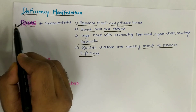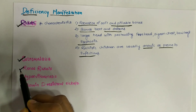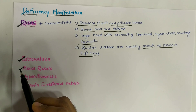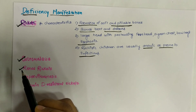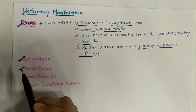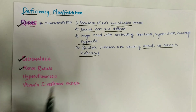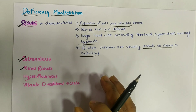Renal rickets occurs in chronic renal failure, where synthesis of calcitriol is impaired. The resulting deficiency of calcitriol leads to hypocalcemia and hyperphosphatemia. It can be treated by oral or intravenous administration of calcitriol — the active form of vitamin D.